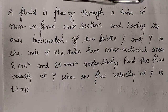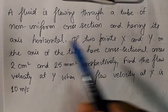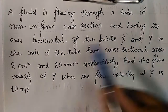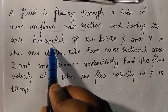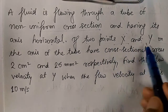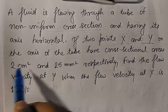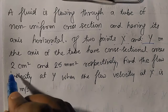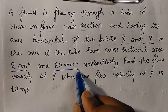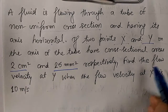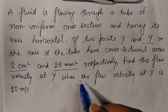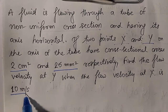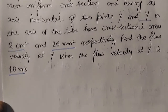A fluid is flowing through a tube of non-uniform cross section, having its axis horizontal. If two points x and y on the axis of the tube have cross-sectional areas 2 cm² and 25 mm², find the flow velocity at y when the flow velocity at x is 10 m/s.